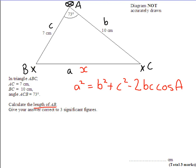Now I need to substitute in the values that I have been given. So A squared is X squared, which equals B squared, which is 10 squared, plus C squared, which is 7 squared,